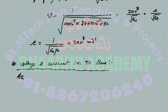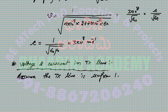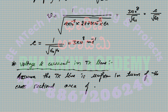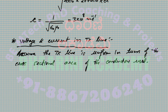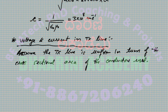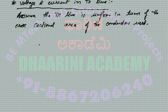Assume the transmission line is uniform in terms of the cross-sectional area of the conductors used. We consider a very small length of the conductor and draw one portion of the equivalent circuit: resistance R and inductance L along the line.